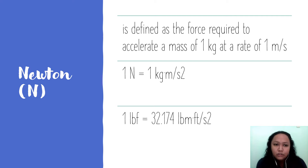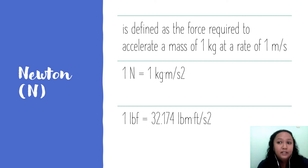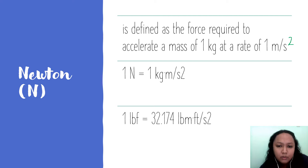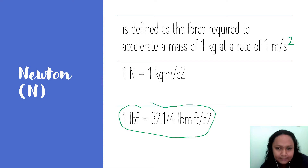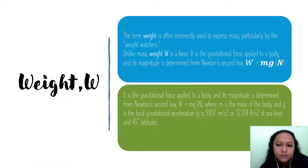So force equals mass times acceleration. In SI, a newton is defined as the force required to accelerate a mass of 1 kilogram at a rate of 1 meter per second squared — that is why the equation is balanced. Also, 1 pound-force equals 32.174 pound-mass times feet per second squared — that is the derived equation in the English system.